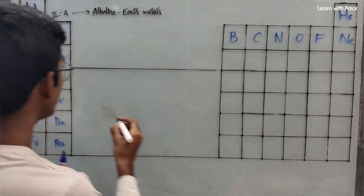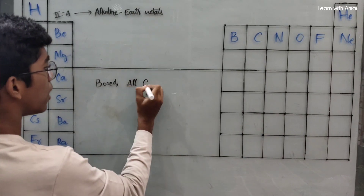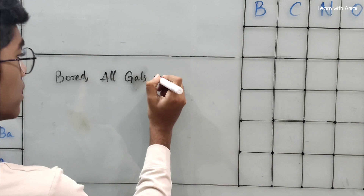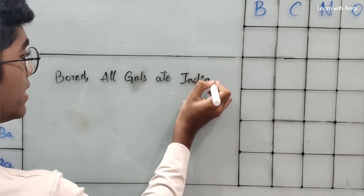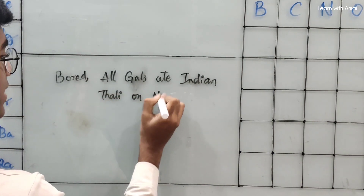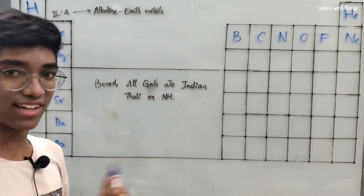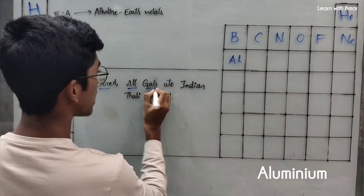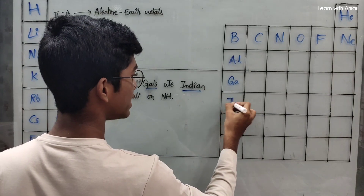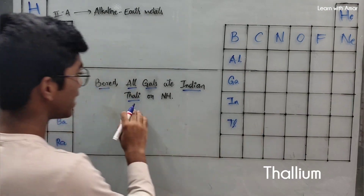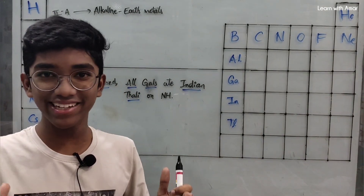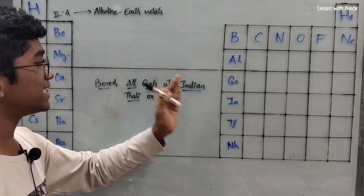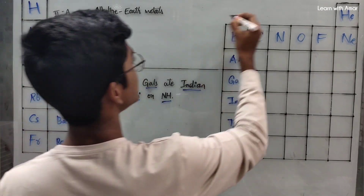First is the boron family, Group 3A. The sentence is: 'Bold all gals ate Indian thali on NH (national highway).' Bold for Boron, All for Aluminium, Gals for Gallium, 8 Indian for Indium, Thali for Thallium, and NH (national highway) for Nihonium. This is the boron family, the 3A group in P block.